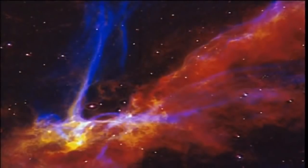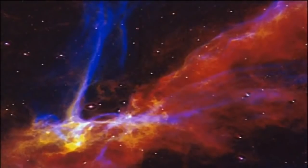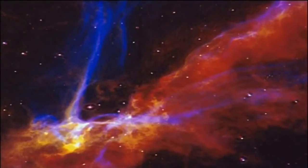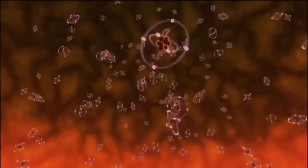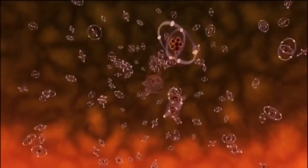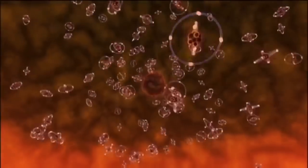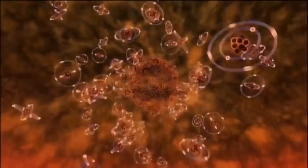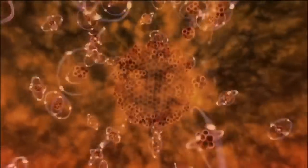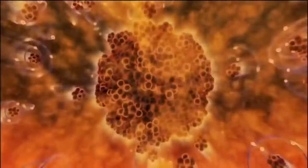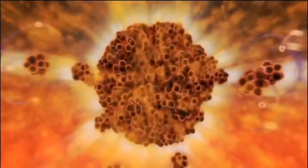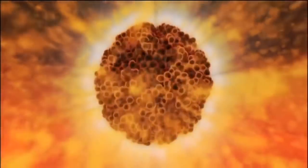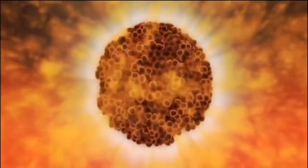But what happens to the collapsed core of these dead stars? When a large star implodes, its weight is enough to squash all the atoms in its core down to their nuclei. The result? An ultra-dense ember called a neutron star. The density of a neutron star is something like taking a mountain and crushing it down to the size of a marble.